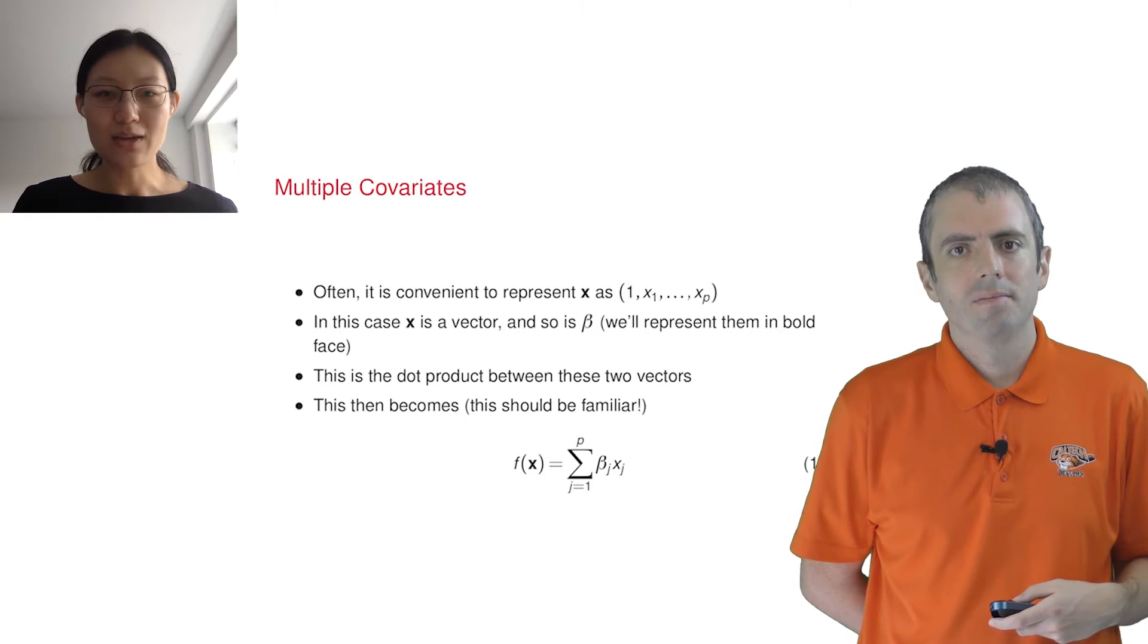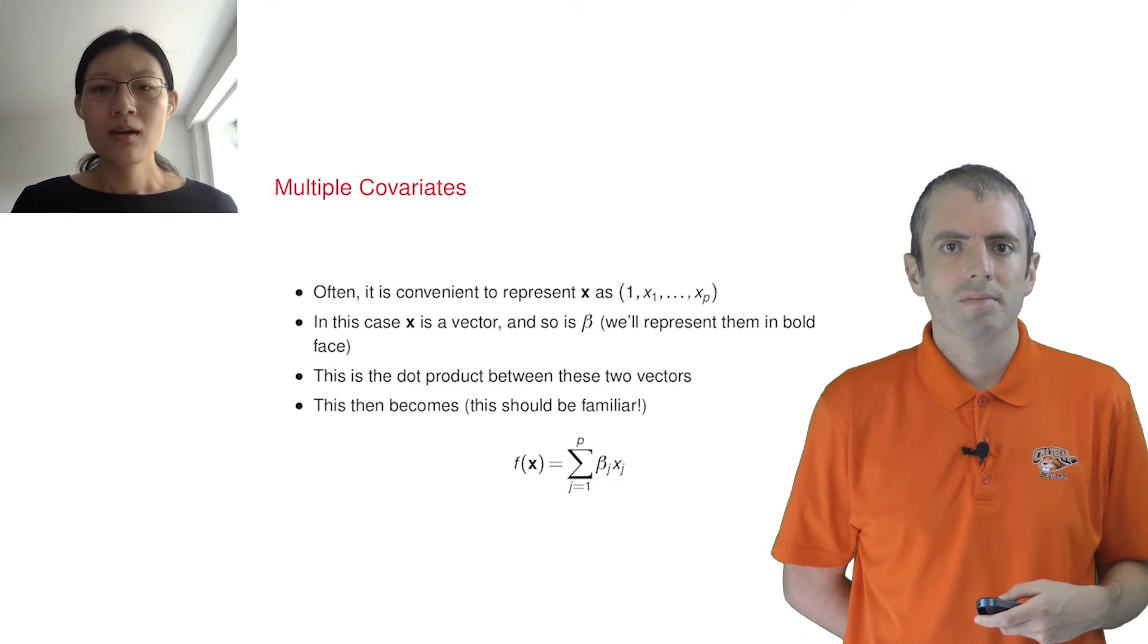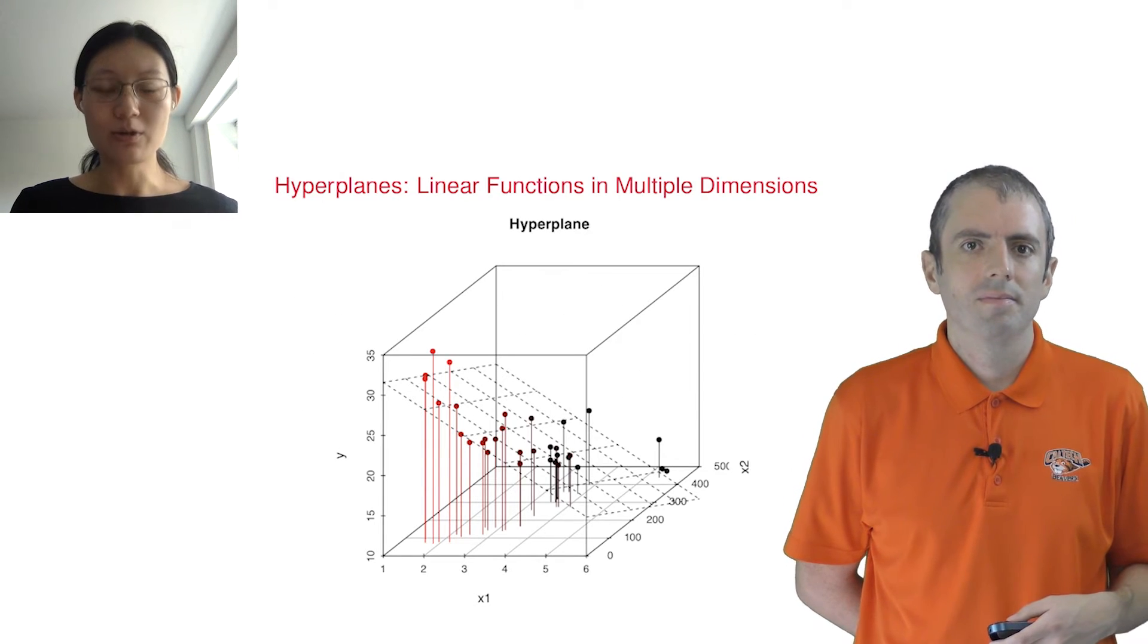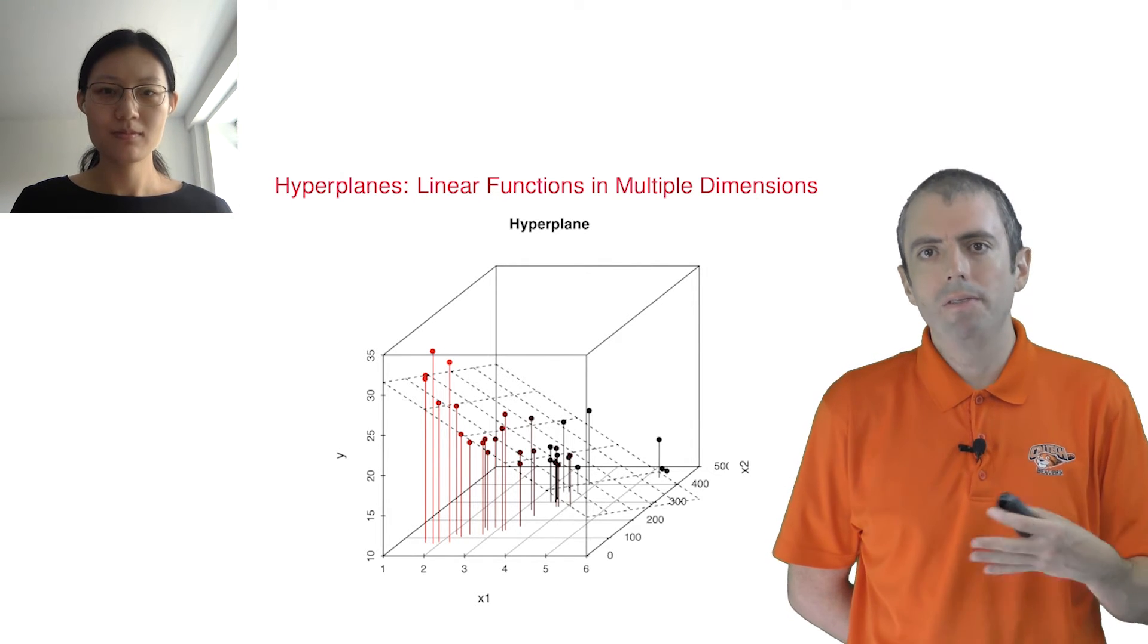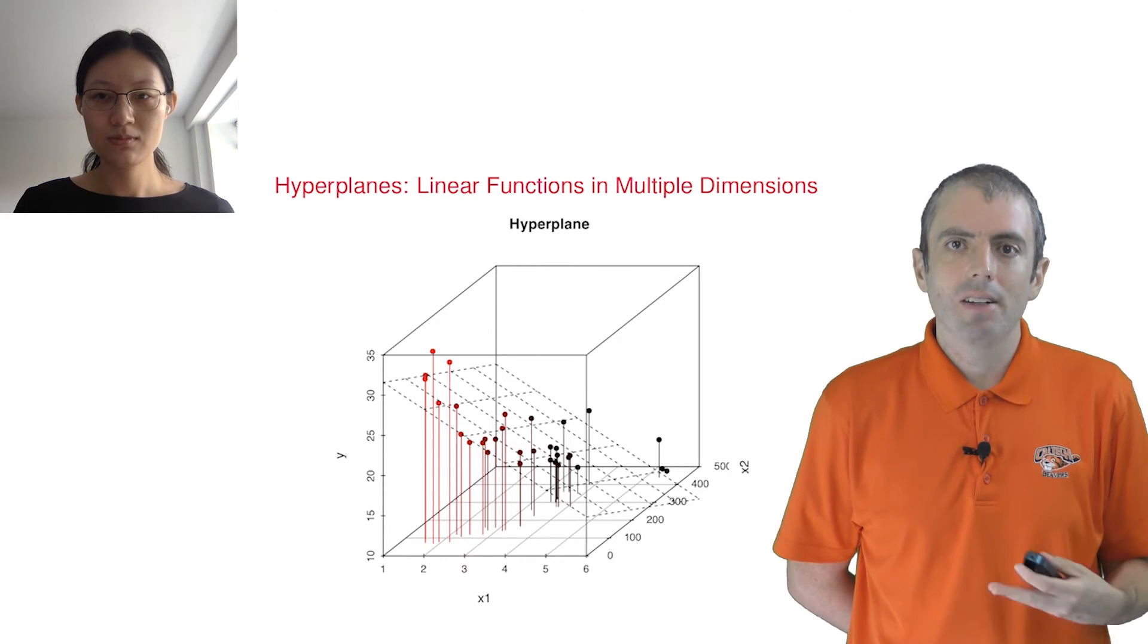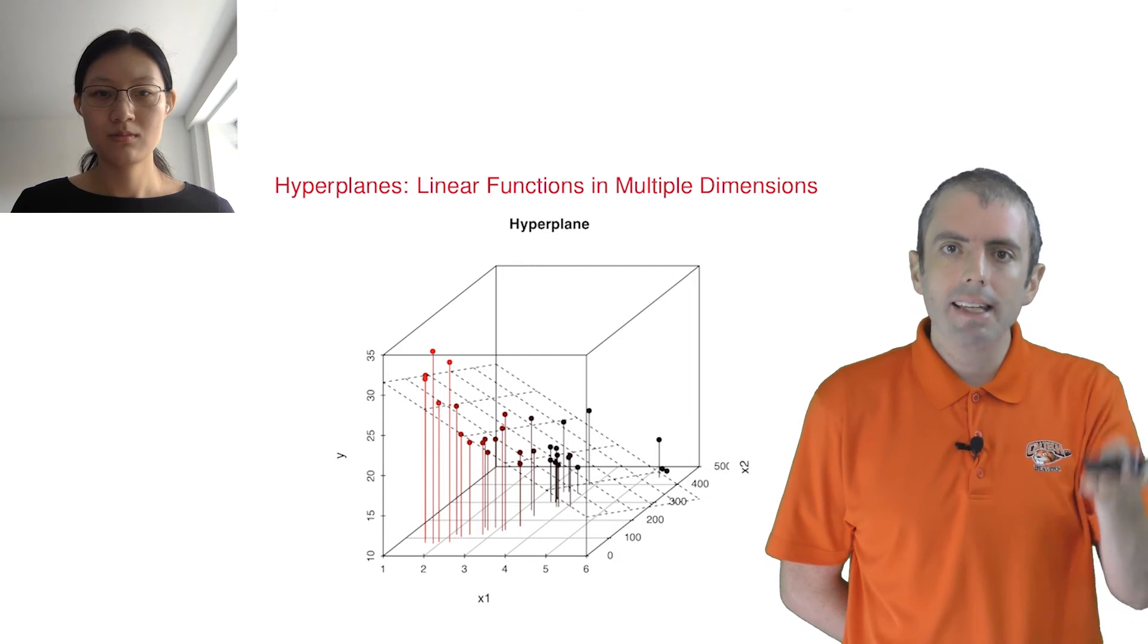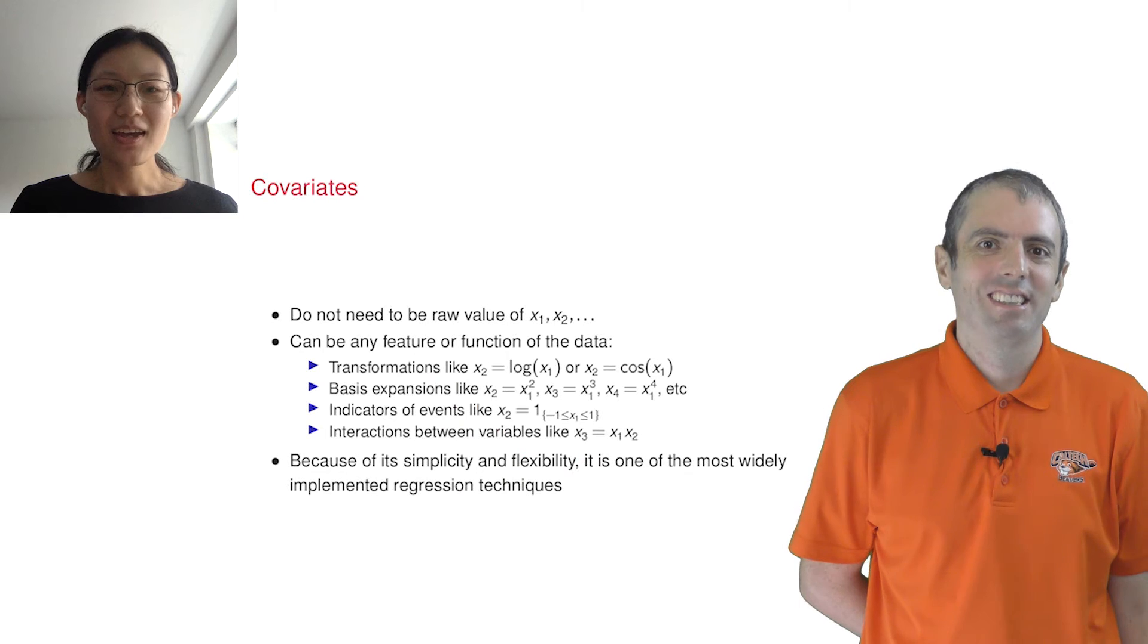This is what it looks like when inputs are a vector rather than a scalar. You have a high number of dimensions, and now instead of a line, we have a plane as our prediction function. Okay, so at the bottom, you have two features, x1 and x2. These are a two-dimensional vector. And how high this plane is represents the prediction, given the vector input. Exactly.